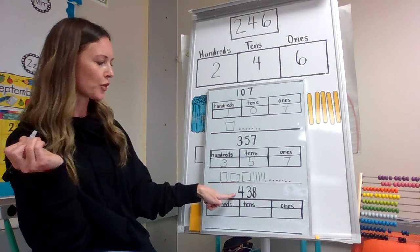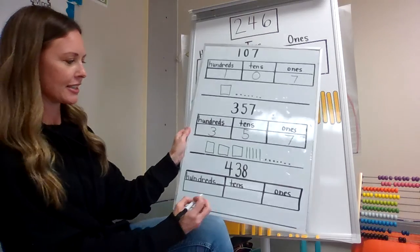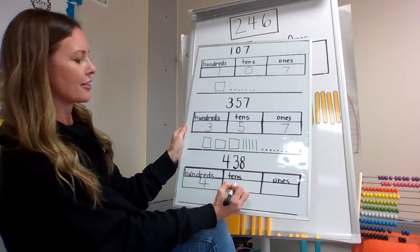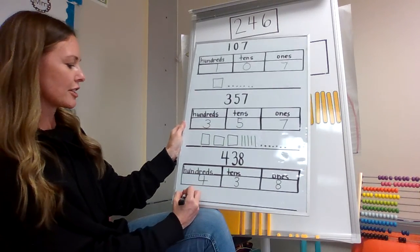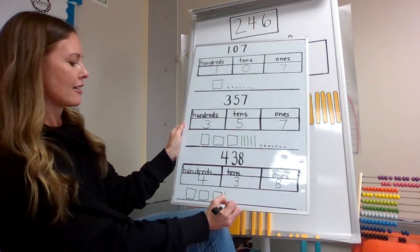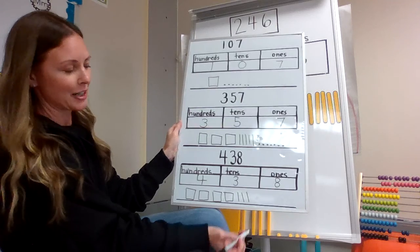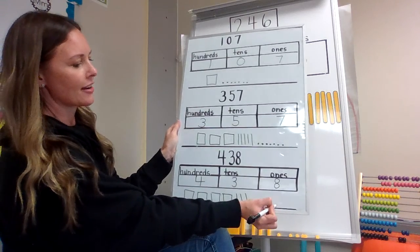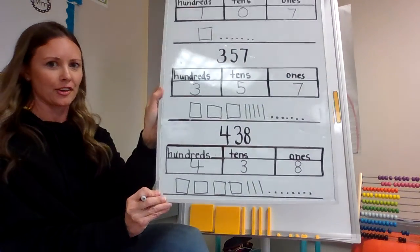And our last one on here is four hundred and thirty-eight. So I need to make — let's put it in our hundreds place first — four hundreds, three tens, and eight ones. So four hundreds would look like this: one, two, three, four. And then my tens: one, two, three. And my ones — how many are you going to make? Eight: one, two, three, four, five, six, seven, eight. So that's just one more way to show your place value using pictures.